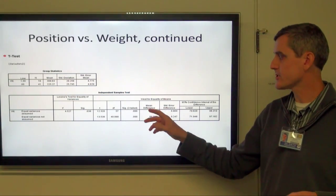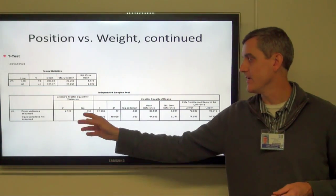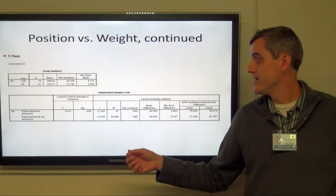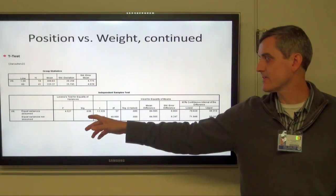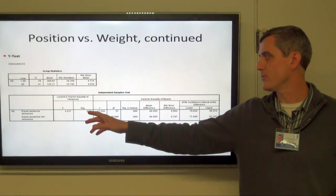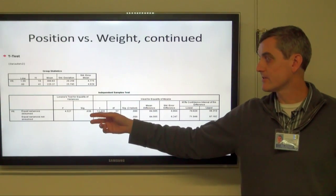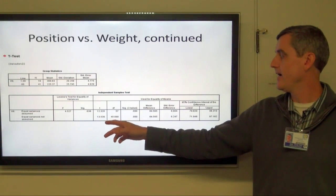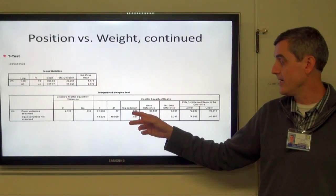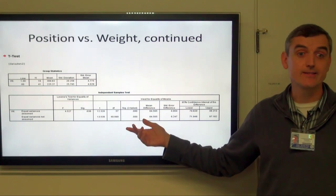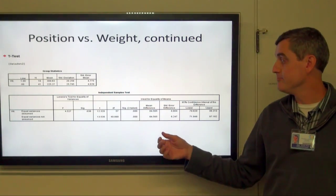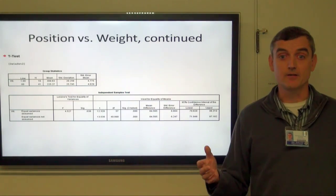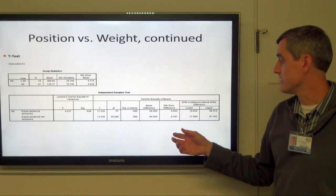The first part of the t-test output looks at whether the variances are equal. If that's less than 0.05, we conclude that the variances are not equal and go to the next line. In this case, both results are significant, so we can say with quite a bit of confidence that linemen are quite a bit heavier than everybody else. We also get a confidence interval.